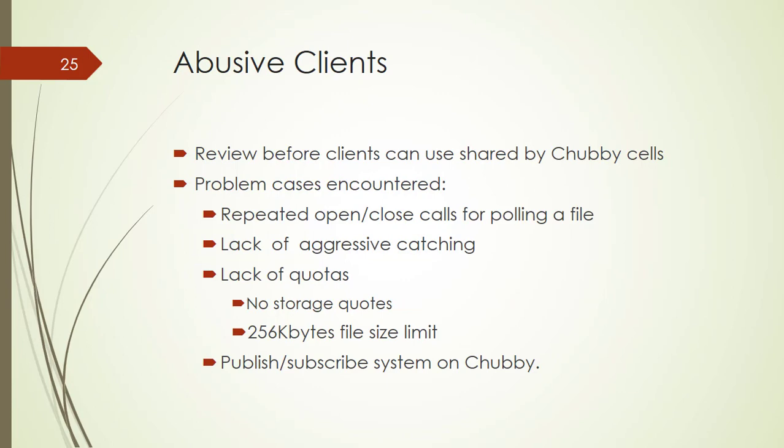The last topic is abusive clients. Google project teams are free to set up their own Chubby cells, but doing so adds to their maintenance burden and consumes additional hardware resources. Many services therefore share Chubby cells, making it important to isolate clients from the misbehavior of others. Chubby is intended to operate within a single company, so malicious denial-of-service attacks against it are rare. But the main problem is that developers are often unable to predict how their services will be used in the future and how usage will grow.